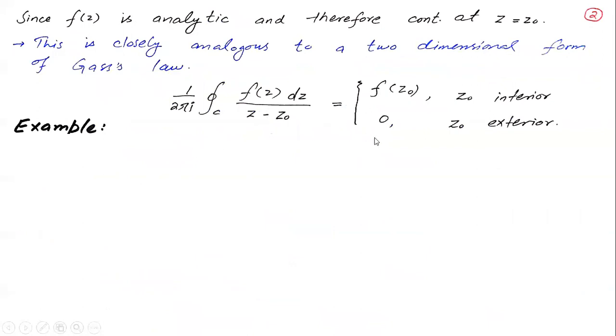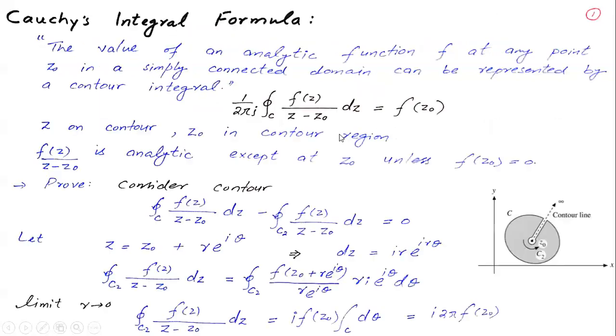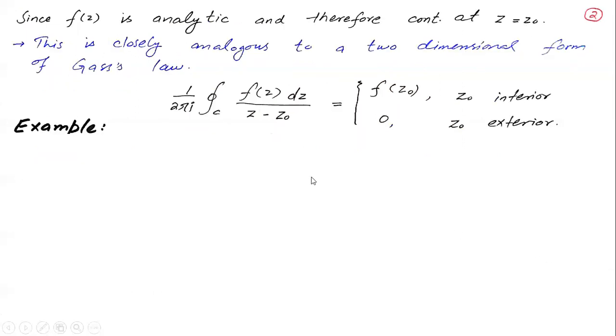The question is, if you have z0 out of the region, outside the contour, then what will happen? If z0 is an exterior point, the integral will be 0. If it is interior, then it will be f(z0). You can also see that this is analogous to Gauss's law.